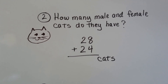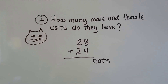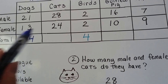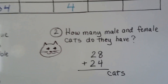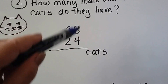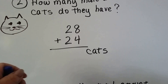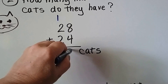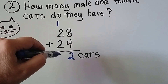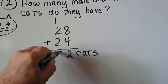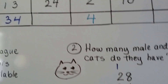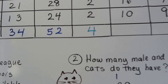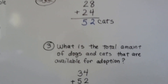Number two says: how many male and female cats do they have? We look on the table for cats — male is 28, female is 24. We find the total starting with the ones column: eight plus four. We start with the larger number, eight, and count on four: nine, ten, eleven, twelve. We regroup the one, put the two down, and add the tens column: one, two, three, four, five. They have 52 cats.